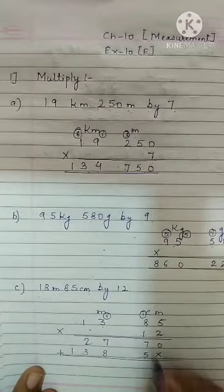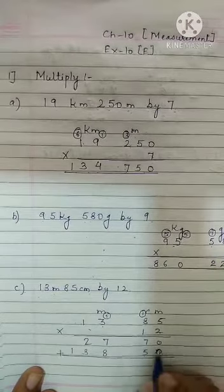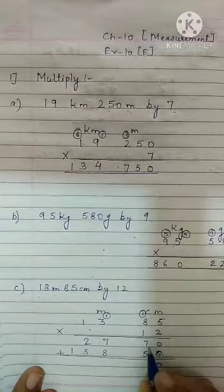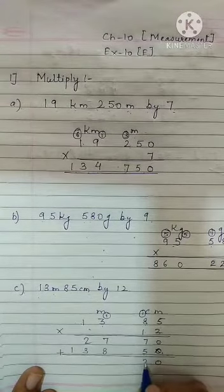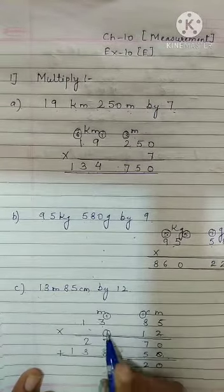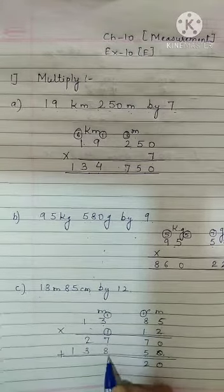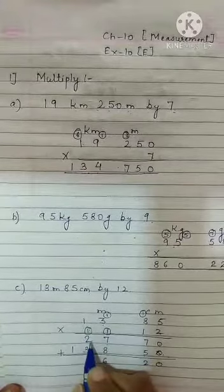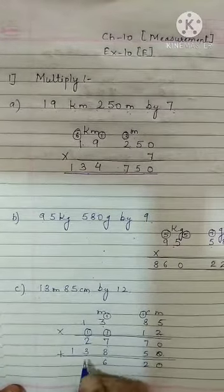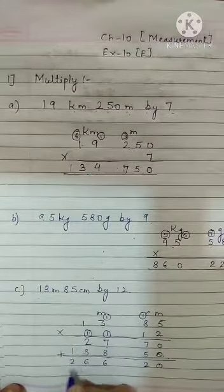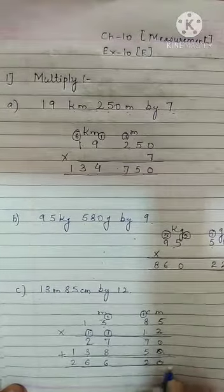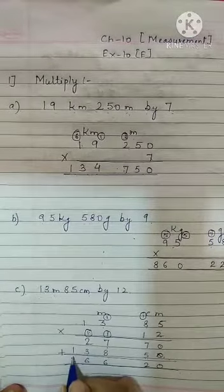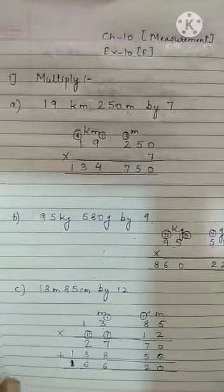Now adding: 0 plus 0 is 0. 7 plus 5 is 12, write 2, 1 carrying over. 1 plus 7 is 8, 8 plus 8 is 16, write 6, 1 carrying over. 1 plus 2 is 3, 3 plus 3 is 6. And 2 will come as it is. Sorry, this is 1, not 2. 1 will come as it is.